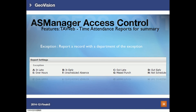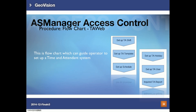The exception summary covers events such as entering late, leaving early, overtime, or a missed punch. This flowchart shows the TAWeb setup process: first set up the TA shift and TA template, then configure your schedule and holidays, then set up users and their payroll, and finally generate TA reports based on your requirements.